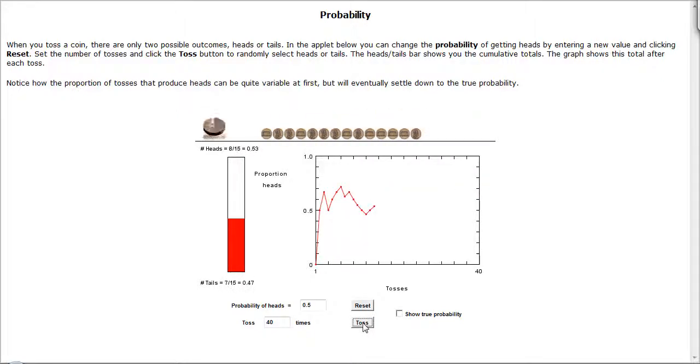And we see that the number of tosses on the x-axis and the proportion of heads on the y-axis. And what we're seeing here is that after 40 tosses, we have a lot of oscillation, but it's starting to settle down here a little bit.